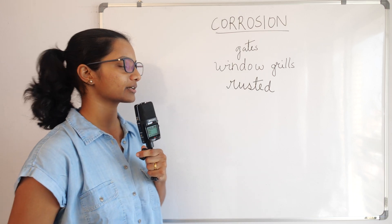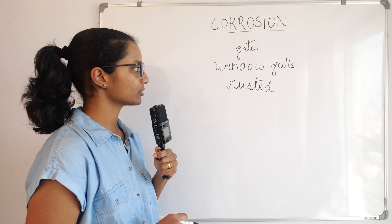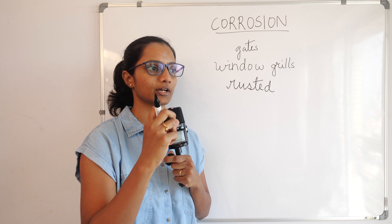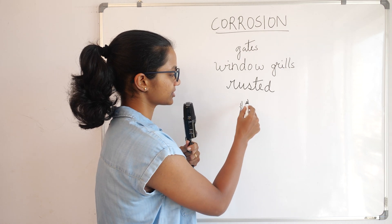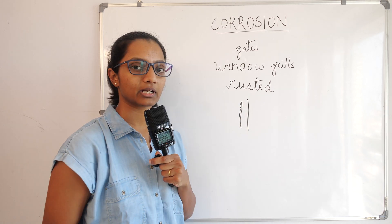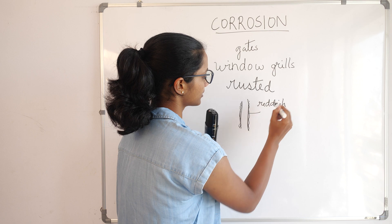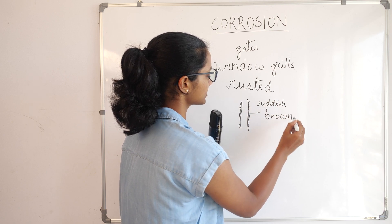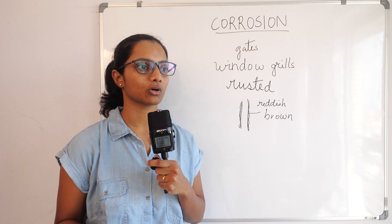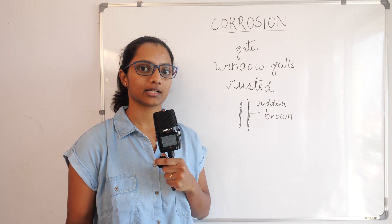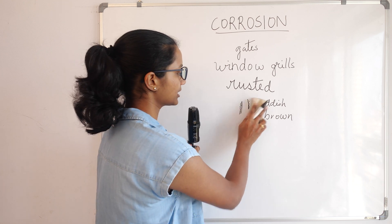Rusting is a process where the metal gets degraded. If you observe, there is a brownish-reddish flaky kind of substance on the outer surface of the metal. Suppose this is an iron metal — on the outer surface there is a reddish-brown flaky substance. This is called rusting. The reason that window grills or gates are painted is to avoid rusting.